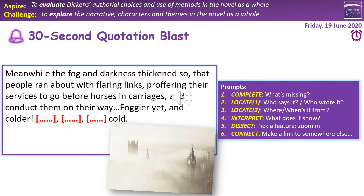Meanwhile the fog and darkness thickened so, the people ran about with flaring links, proffering their services to go before horses and carriages, and kept them on their way. Foggy yet, and colder, piercing, searching, biting cold. And again we're back in Stave One.